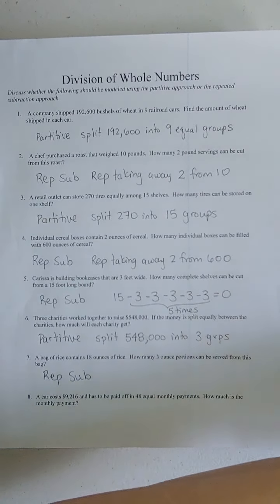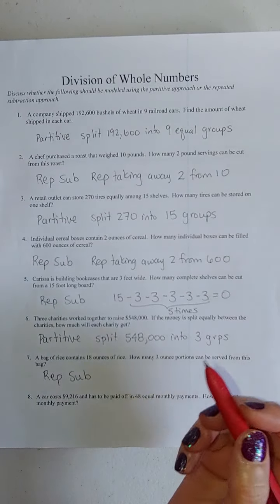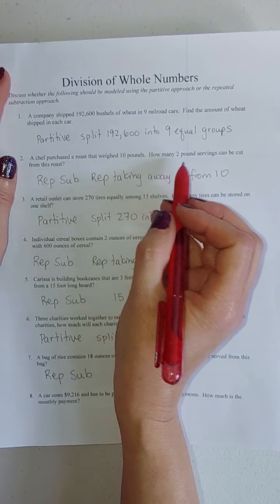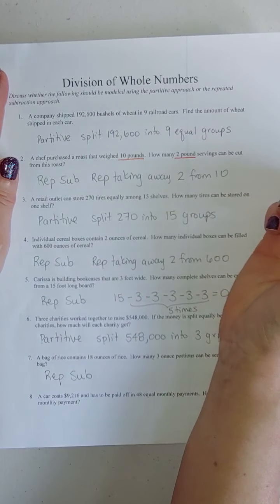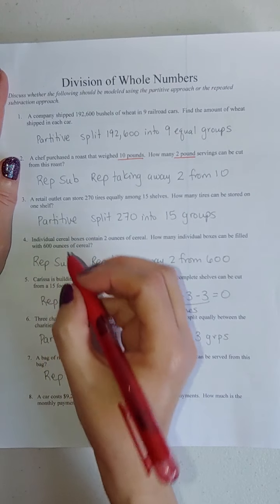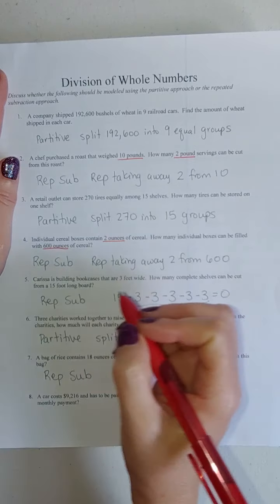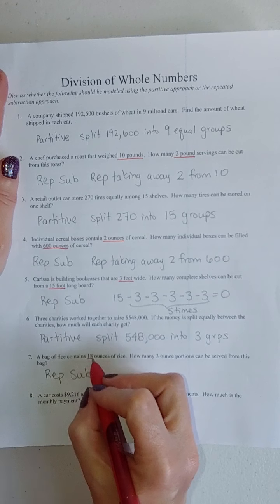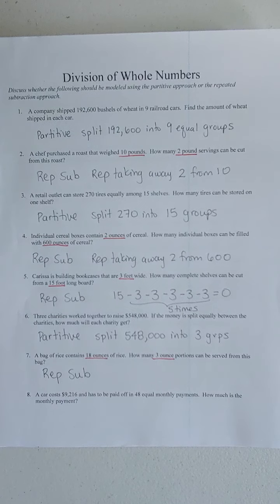It's worth pointing out at this point that there is a little trick that you can look for. Look at it with repeated subtraction. My two numbers, ten and two. 600 ounces, two ounces. Fifteen foot board, three feet wide. Eighteen ounces, three ounces. Look at all those underlined in red.